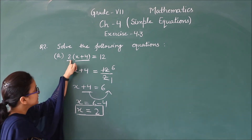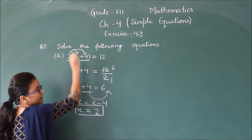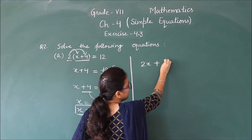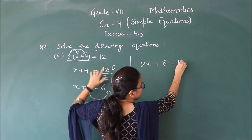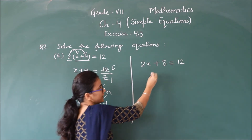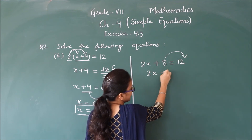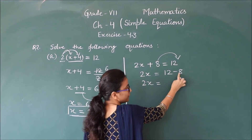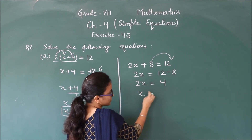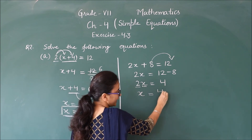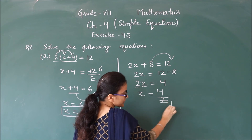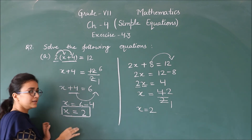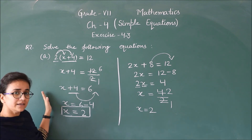इसको हम और कैसे कर सकते थे? हम इस 2 को अंदर multiply कर सकते हैं — 2x plus 2 को 4 से multiply करके 8 is equals to 12. अब यह बिल्कुल similar है — यह 8 पहले right में जाएगा: 2x is equals to 12 minus 8, that is 4. अब x is equals to 4 upon 2, क्योंकि यह 2 और x multiplied हैं — 2 वहाँ divide में। तो x is equals to 2. तो हम कैसे भी solve कर सकते हैं जैसे हमें easy लगे। Clear? ऐसे ही हम इसके बाकी parts कर सकते हैं।